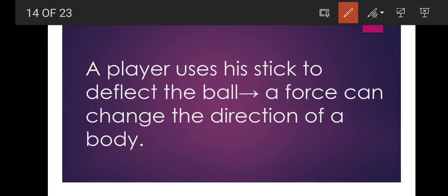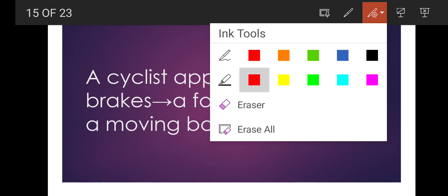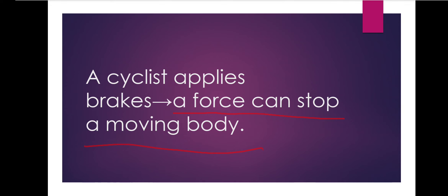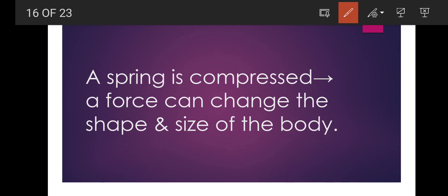A player uses his stick to deflect the ball, so a force can change the direction of a body. Next: a cyclist applies brakes — a force can stop a moving body. Next: a spring is compressed — a force can change the shape and size of the body, because when the spring is compressed, its size gets shortened and its shape also changes.